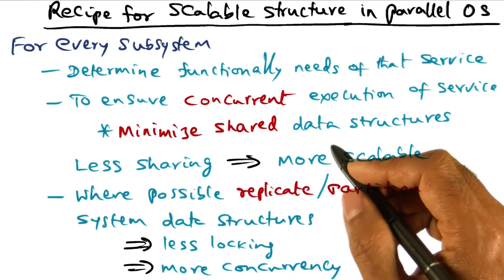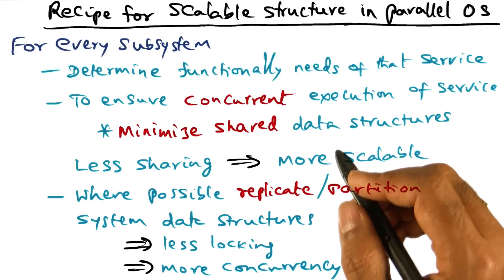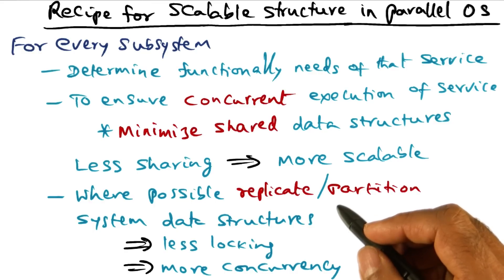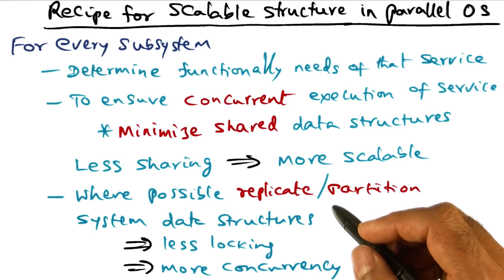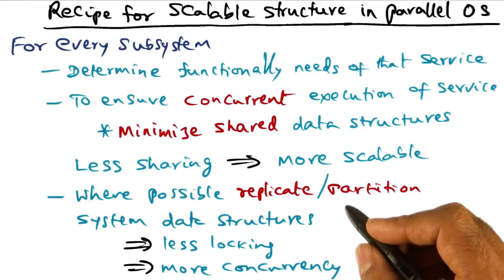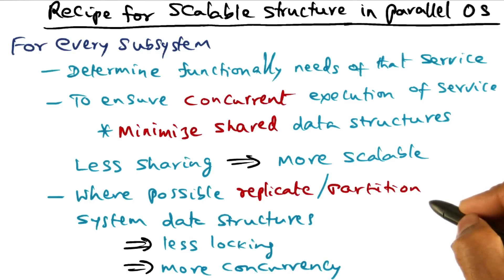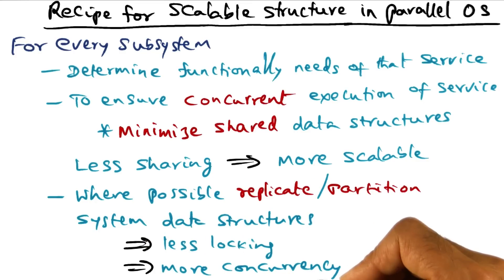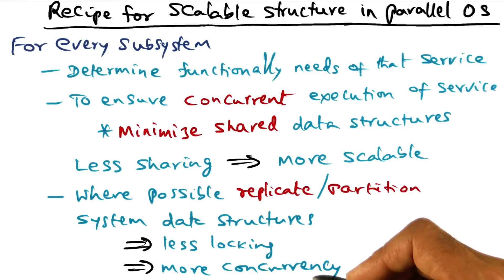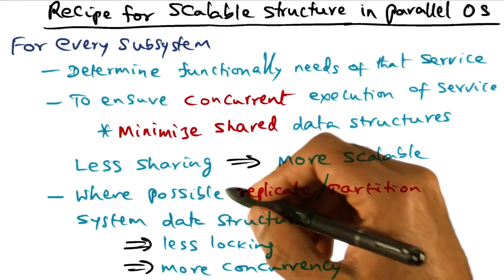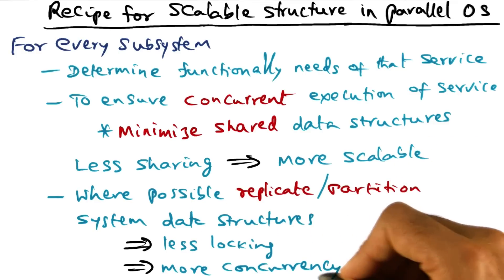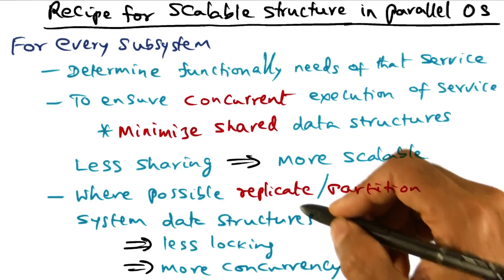So we can now quickly see what the dilemma is for the operating system designer. As an OS designer, we want the freedom to think logically about shared data structures. But later, depending on the usage of the data structure, we want to replicate or partition the data structure so that we can have less locking and more concurrency. The trick is: think logically — yes, it's a shared data structure — but based on the usage, replicate or partition the system data structures to achieve more concurrency and less locking.